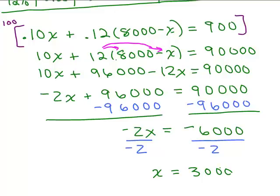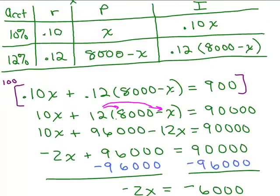Now, remember, X stood for something. Okay, let's go back up here. What did X stand for? X stood for the amount of money I'm investing at 10%. All right, so it looks like I'm going to invest $3,000 at 10%, which leaves what? For the amount invested at 12%, $5,000.